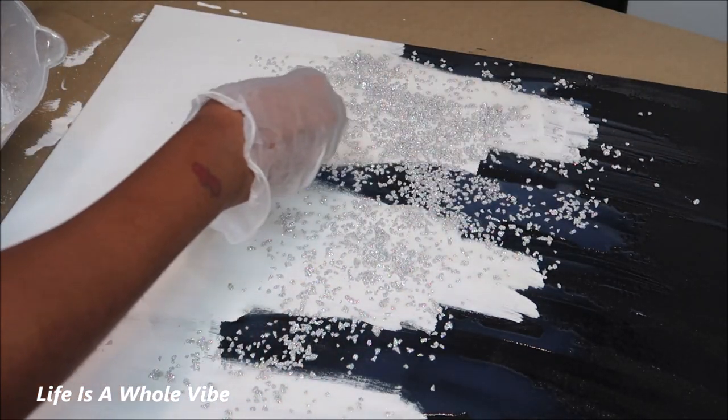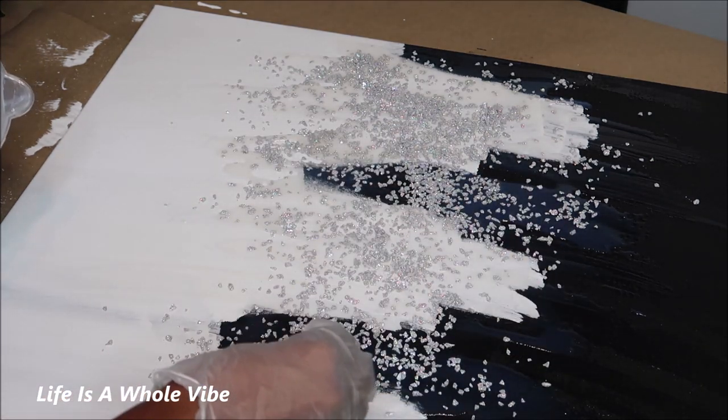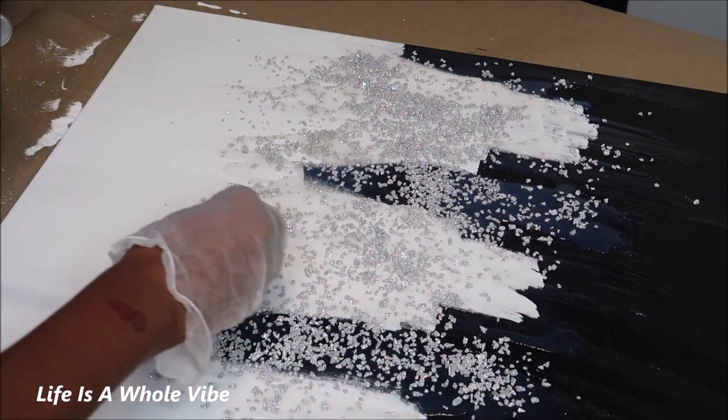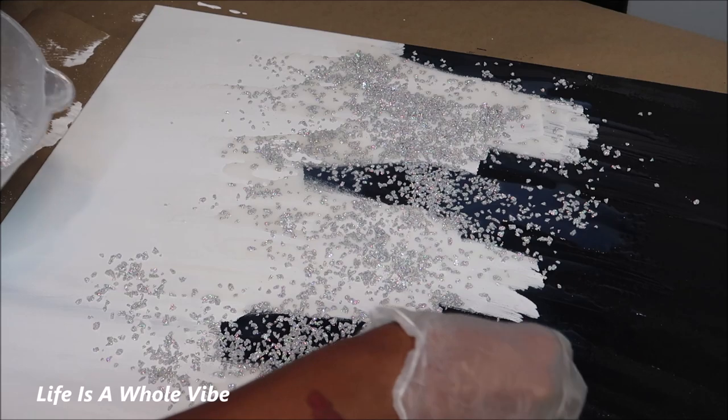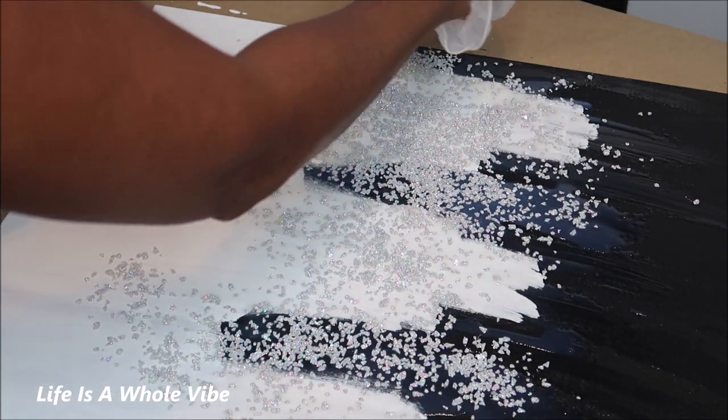Now if you don't have crushed glass there are alternatives. I have used the rocks from the Dollar Tree. The decorative rocks and I've painted them different colors. I've added glitter to them. They're just a little bigger than this. So you could add crushed glass and rocks or you could just do glitter. It's completely up to you.